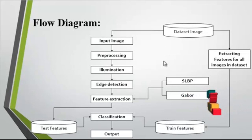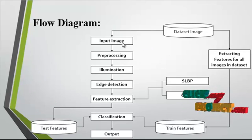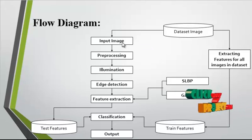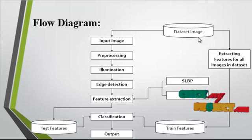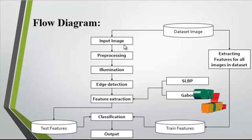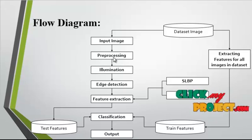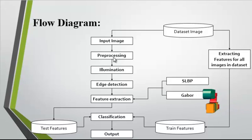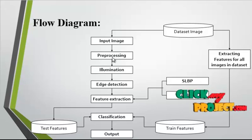Now we discuss the flow diagram for the process. First, the input image is taken from the dataset, which contains several images. After getting the input image from the dataset, pre-processing is undertaken. In the pre-processing step, we separate the RGB channels and then remove the noise from the images.